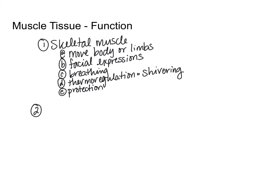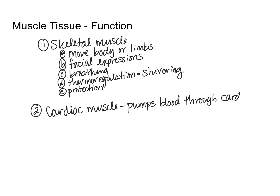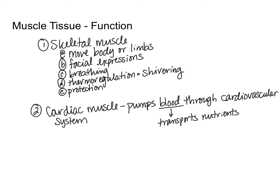For cardiac muscle, remember it is located in the heart. Its function is to contract to pump blood throughout your cardiovascular system. Blood is a fluid containing cells and other substances, and its main role is transporting nutrients around the body. Blood is actually technically a type of connective tissue, and cardiac muscle is what helps to move it around.